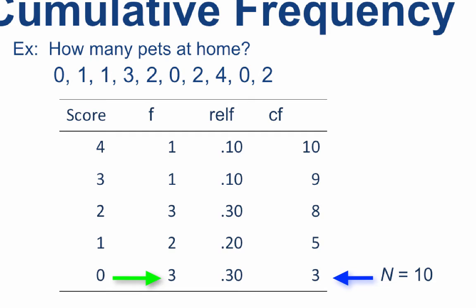Now we begin to accumulate frequencies. For the next cumulative frequency, the answer will be 3 plus the next frequency score, which is 2, for those with only one pet. 3 plus 2 equals 5, so 5 is the cumulative frequency for the score of 1.